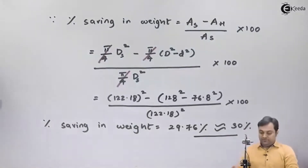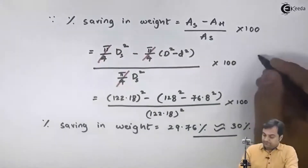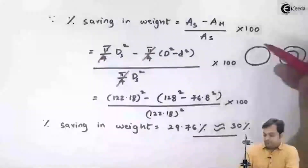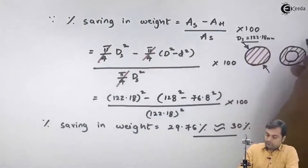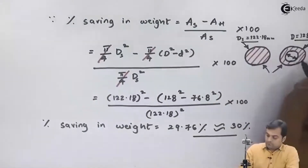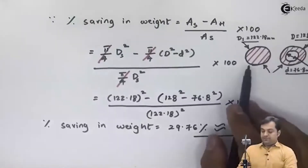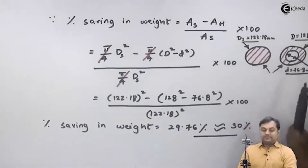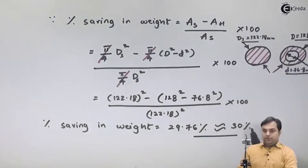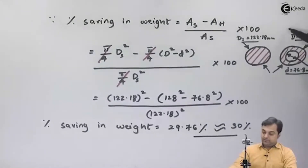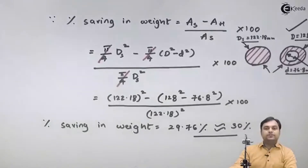It means if we prefer a hollow shaft instead of a solid shaft, approximately 30% weight would be saved. I have drawn the cross-sections of both the solid and hollow shaft, and as we have seen the percentage reduction in weight by using a hollow shaft is 30%. We would prefer the hollow shaft cross-section over the solid shaft, and with this we complete the question.